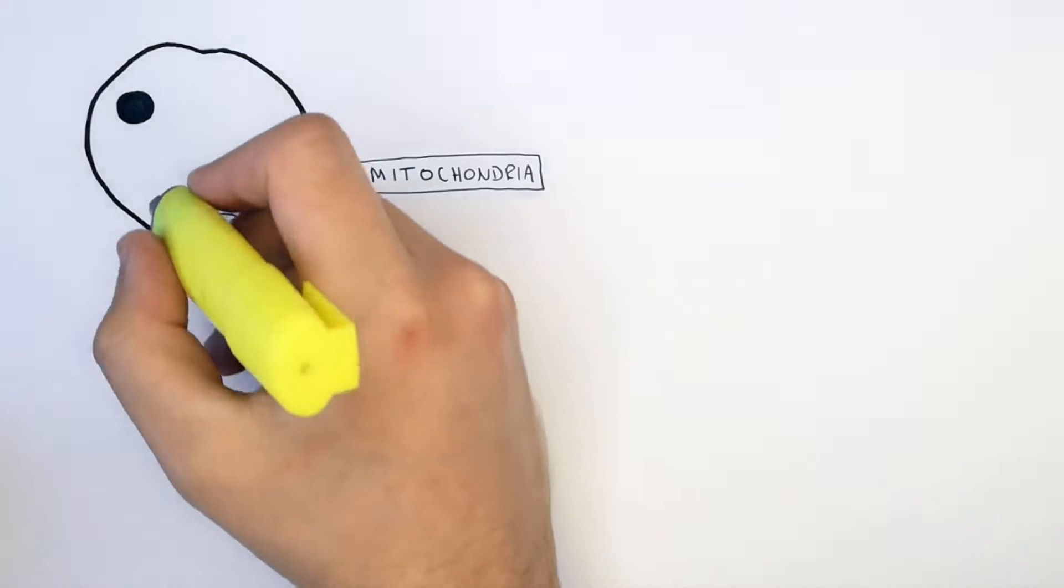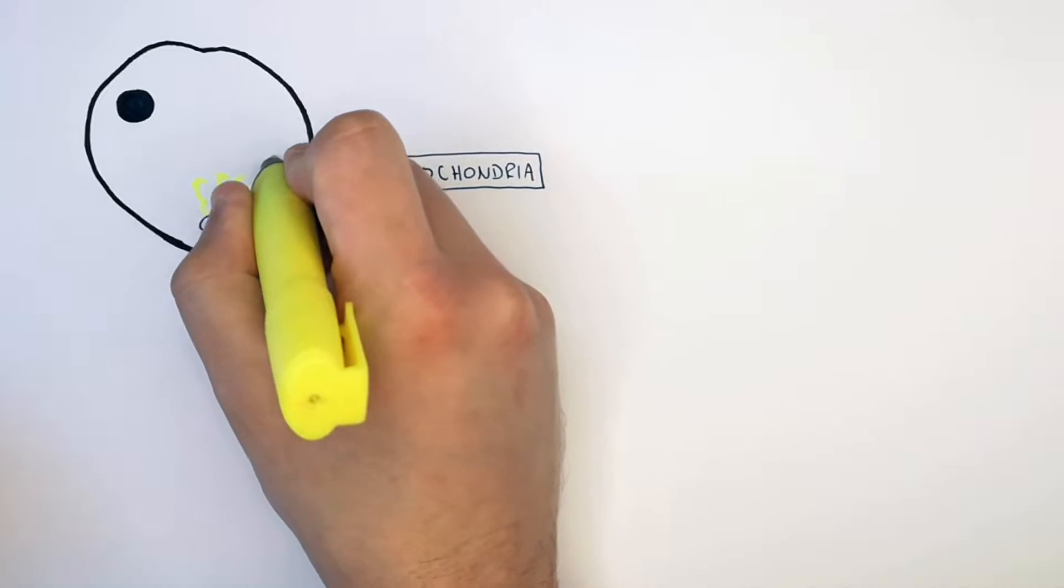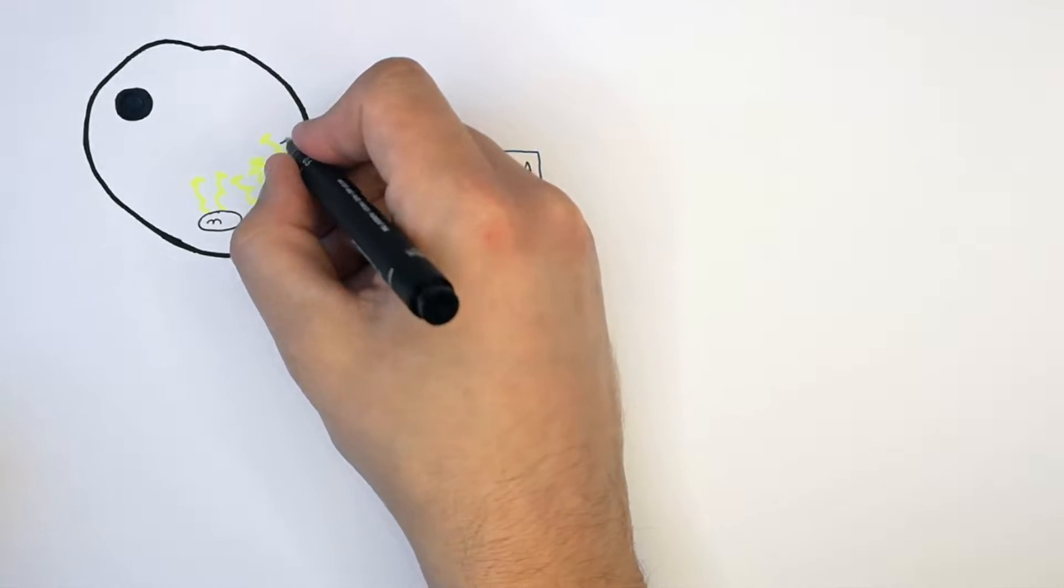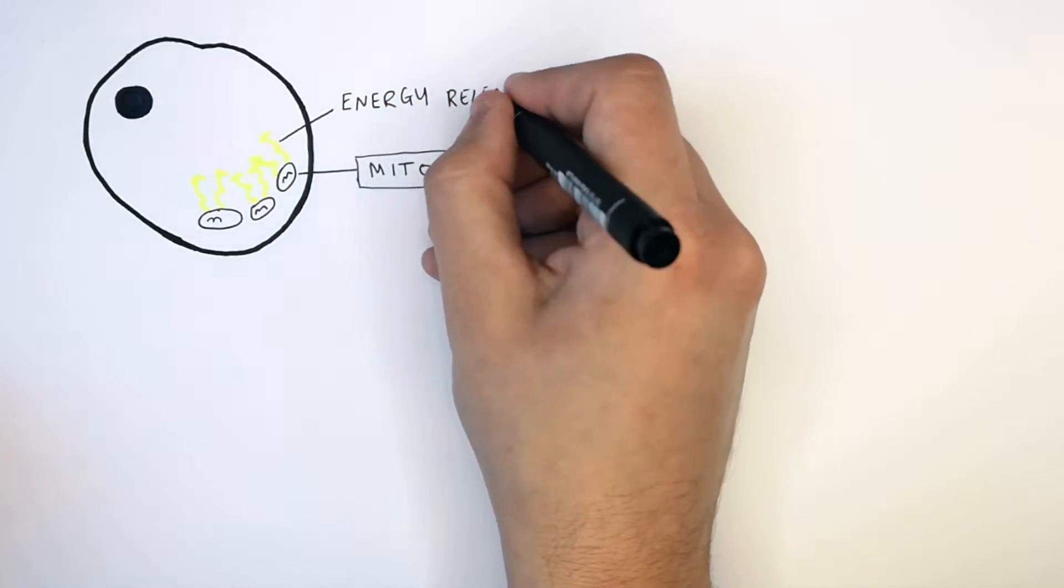The mitochondria are organelles of the cell that release energy. They do not produce energy, they release energy into the cell. As you can see here, these mitochondria are releasing energy into the cell.